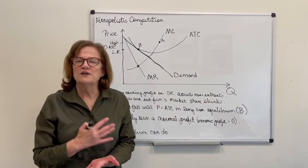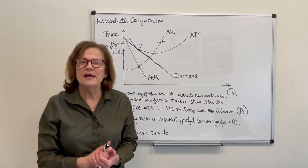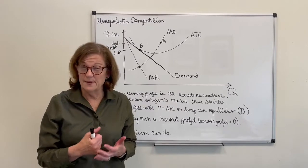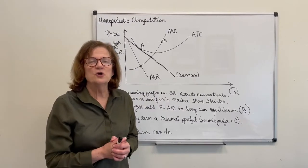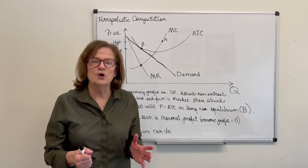When the price falls far enough that there are no excess profits—that is, economic profits are zero—firms stop entering and the market's in equilibrium.